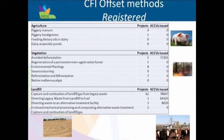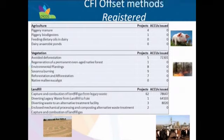Currently the government is looking at changing the permanence rules from 100 years to around 25 years to get landholders more engaged. Avoidance of leakage means you can't destock one property and double the stocking rate on the next one. This gives you a sense of what methods have already been approved, with the number of projects and carbon credits issued. The major beneficiaries so far have been town councils managing landfill gas waste - about 62 projects - because the science around landfill gas has been well established for a long time.